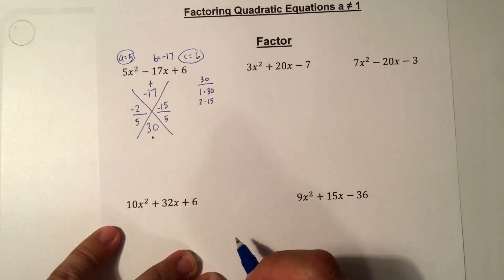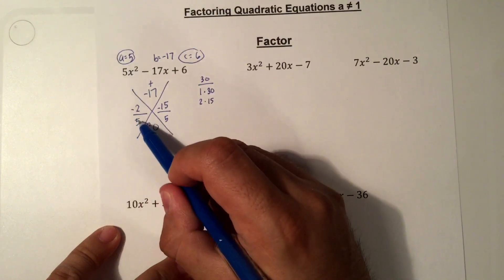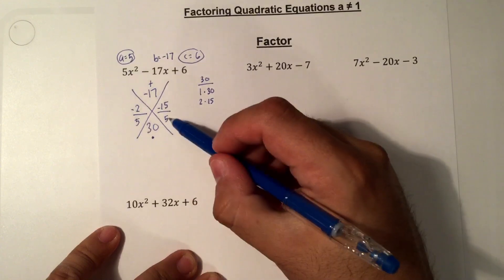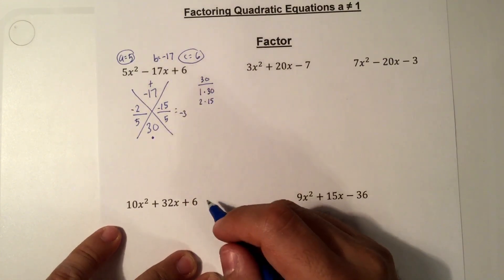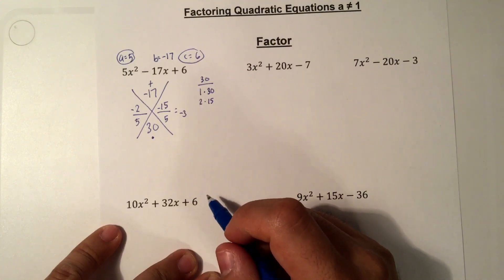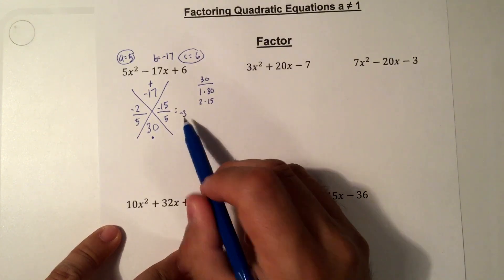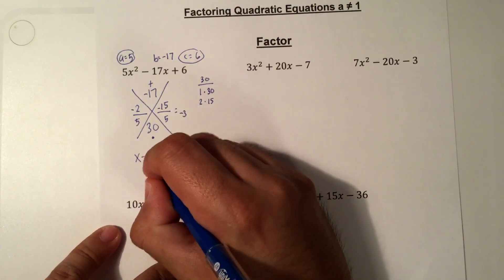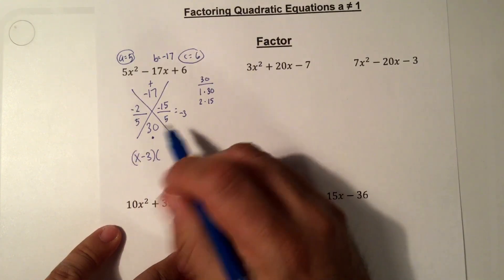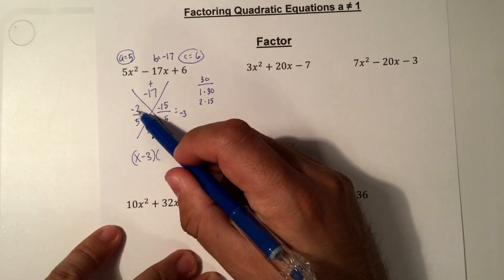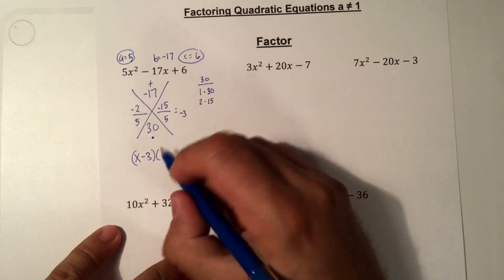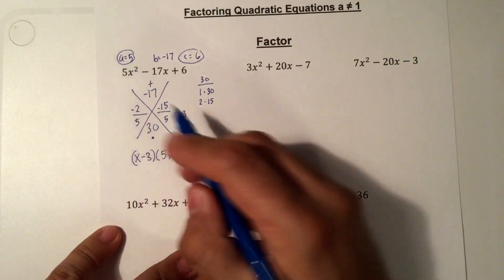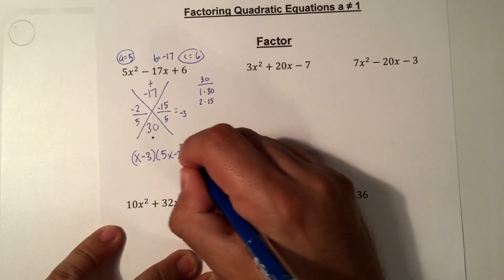Next thing we do is we simplify. Negative 2 over 5 cannot reduce, and 5 does not go into negative 2 evenly. The second one, 5 goes into negative 15 negative 3 times. Now we write our factored form or intercept form. This is minus 3, we're going to write that as x minus 3. For the second one, since the 5 cannot reduce or go evenly into 2, we take this 5 and we move it in front of the x. So this is going to be 5x, and then this sign is minus 2. So 5x minus 2 is my answer.